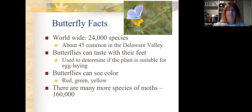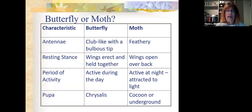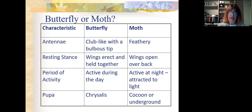Here are some ways we can tell the difference between butterflies and moths. One of the most reliable is the shape of the antenna — on butterflies they're like clubs with a bulbous tip, whereas on moths they're more feathery, almost fern-like. In the resting stance, butterflies hold their wings together above their backs, while moths keep their wings open. Butterflies are active in the day, moths at night and attracted to light. Butterflies make chrysalises; moths make cocoons or pupate underground.